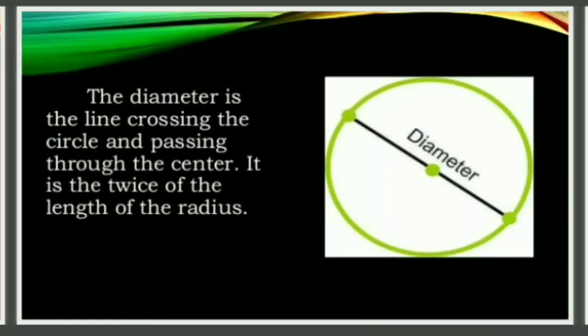Diameter: The diameter is a line crossing the circle and passing through the center. It is twice the length of the radius.